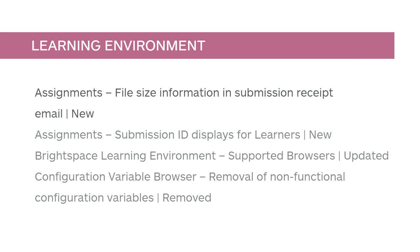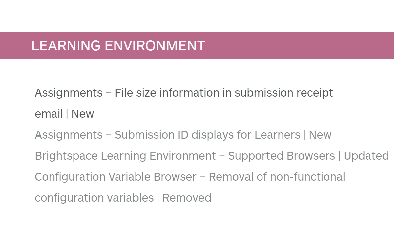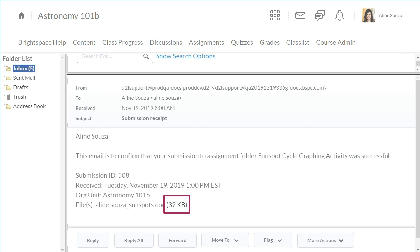When learners submit an assignment, file size information now displays next to the file name in the submission receipt email. This feature implements PIE item D5253. When a learner submits an assignment, their email confirmation identifies the file size.